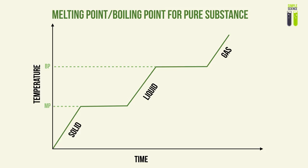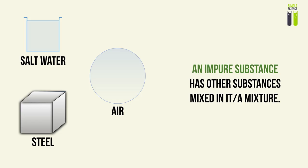If we look at the melting and boiling point graph for a pure substance — a constant heating graph — we can see that the equilibrium state where solid and liquid, or liquid and gas, coexist corresponds to the melting and boiling points. When extended to the y-axis, there is only one specific temperature at which each equilibrium state exists. So for pure substances, the melting point and boiling point occur at exact, fixed temperatures with no range.